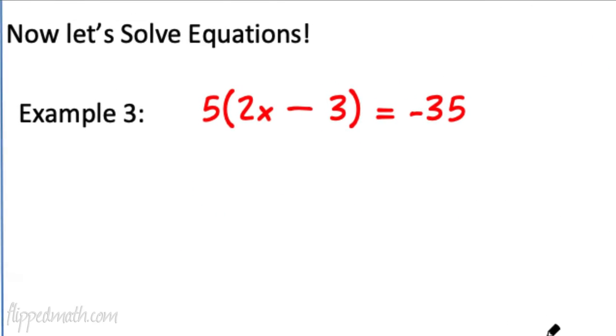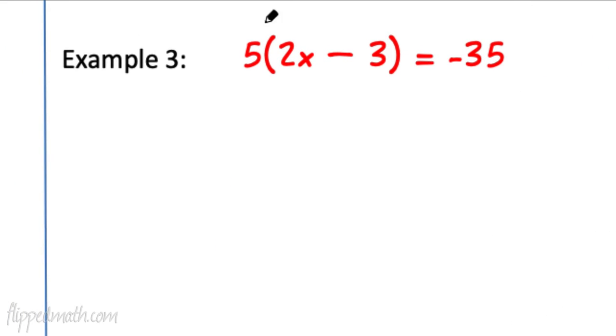Now let's solve some equations. Example 3. We start right off. Notice we have 5 times the quantity. That's how we say that. 5 times the quantity, 2x minus 3. Let's use that distributive property. So 5 times 2x is 10x. And 5 times a negative 3. That's how you got to put in your head. That's like a negative 3. So 5 times a negative 3. That's like a negative 15. So I'm going to write minus 15. I'm not going to forget about my line right there. And it all equals negative 35.